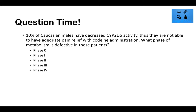Practice question: 10% of Caucasian males have decreased CYP2D6 activity, so they're not able to have adequate pain relief with codeine administration. What phase of metabolism is defective in these patients? The answer is Phase I, because Phase I metabolism uses the microsomal cytochrome P450 system — oxidation, hydroxylation, reduction. Phase II is the conjugation process.